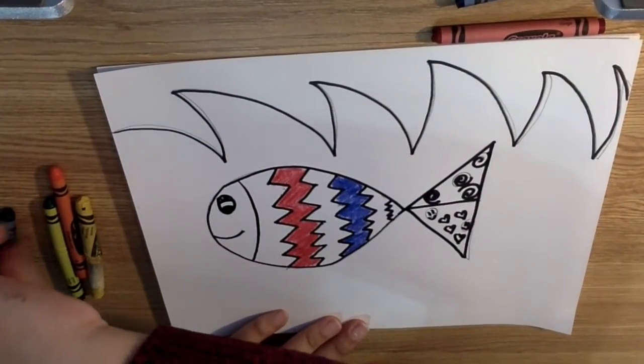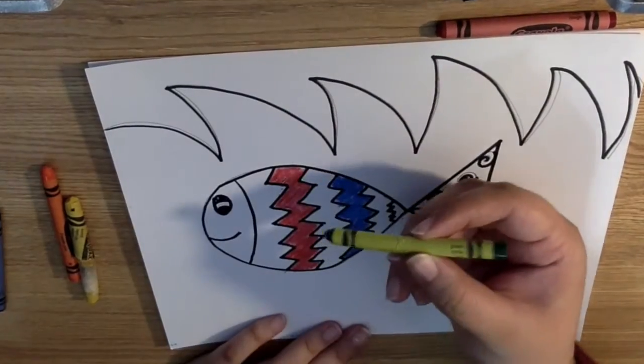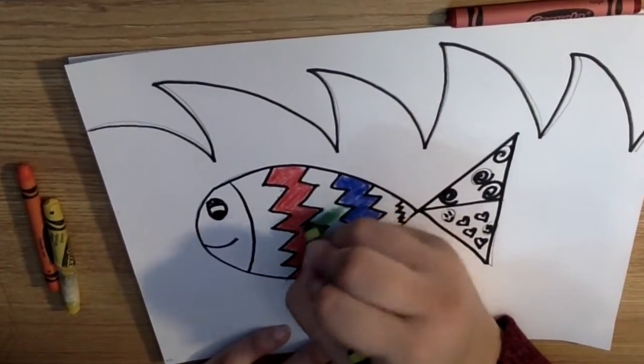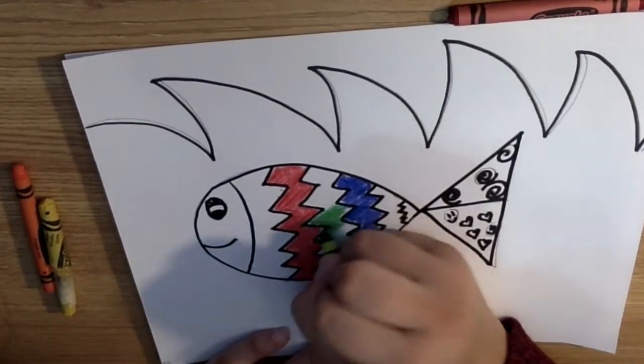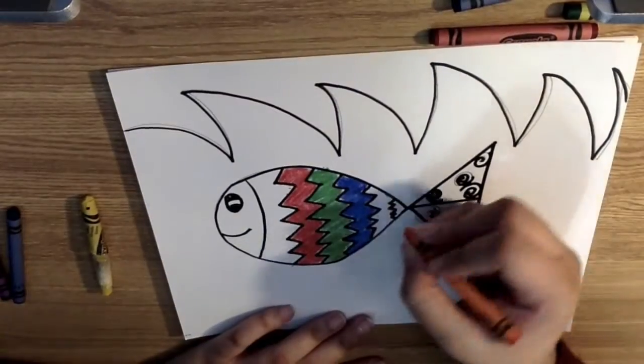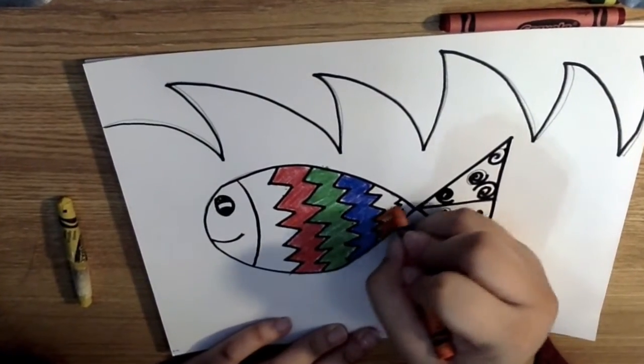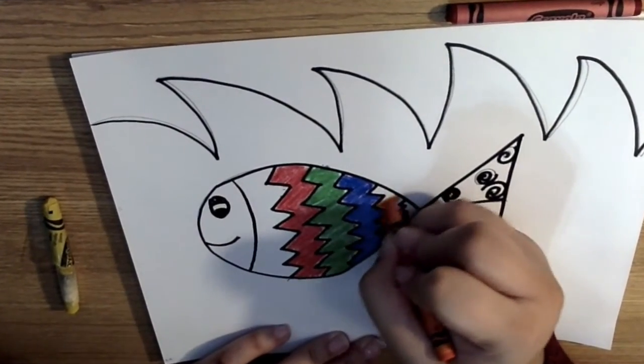Now I'll get my green color. And I'll do it right in between red and blue. Grab another color. And keep coloring until you have the fish body all colored in.